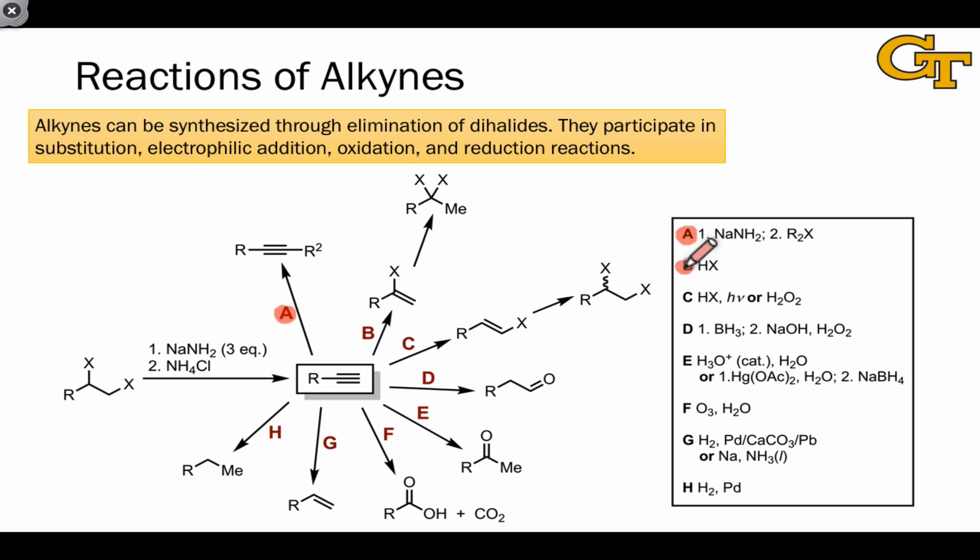Reaction B is hydrohalogenation, and this leads to more substituted alkenyl halide products when we avoid the formation of radicals through the strict use of HX only. A second round of addition here produces a geminal 1,1 dihalide product.